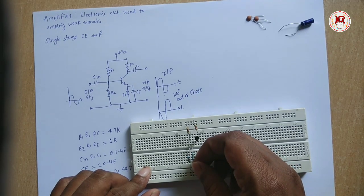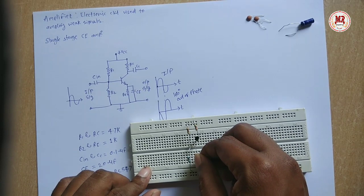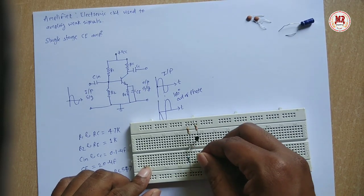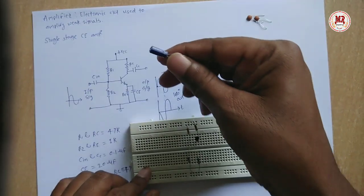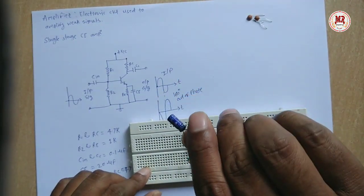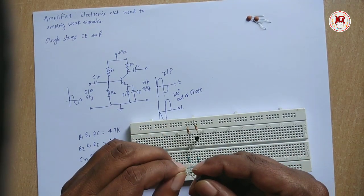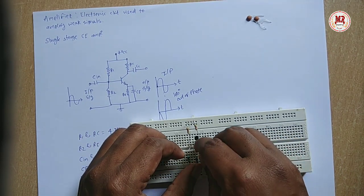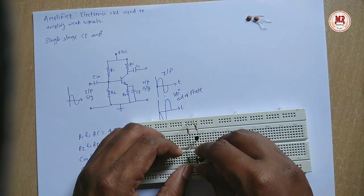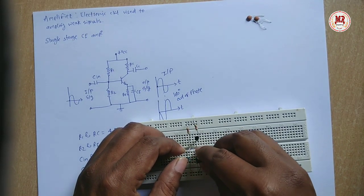From emitter to ground. This is emitter capacitor CE.